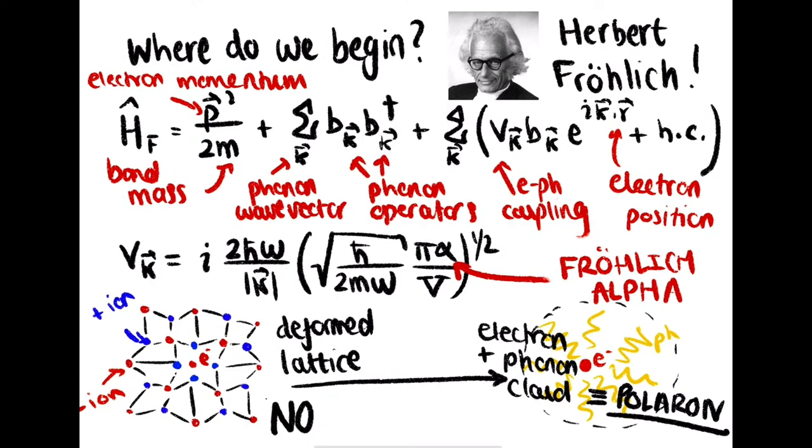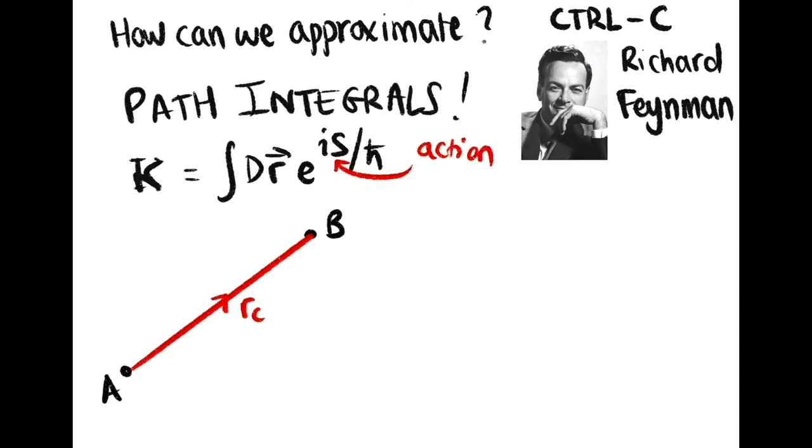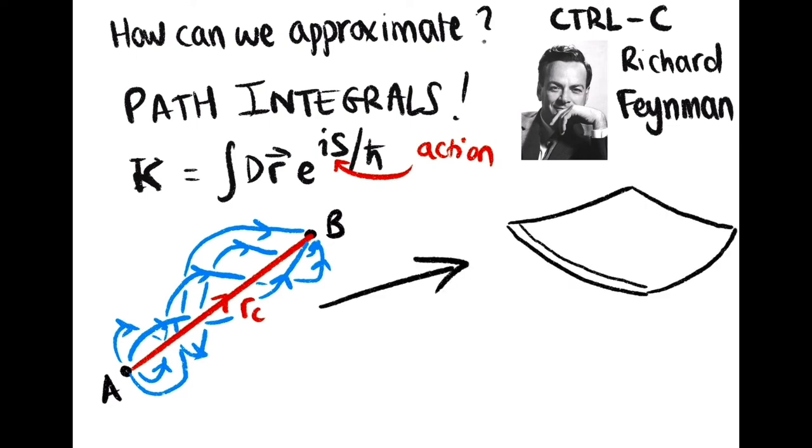Froelich's model has no known exact solution. Therefore, we seek an approximate solution, so we copy Richard Feynman and use path integrals. These focus on all the possible trajectories that the polaron can take. The result is that the infinite number of phonons can instead be replaced with an effective potential.